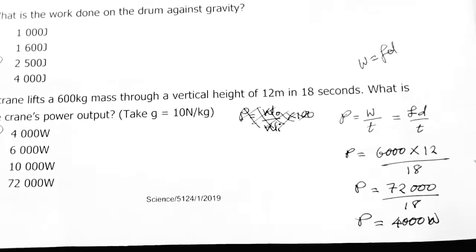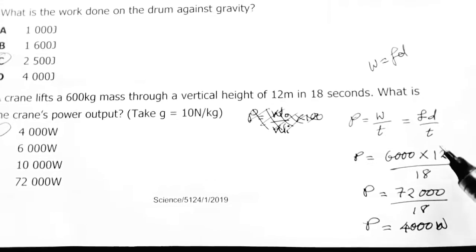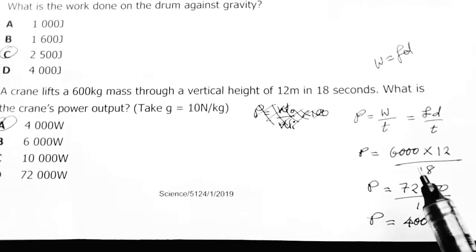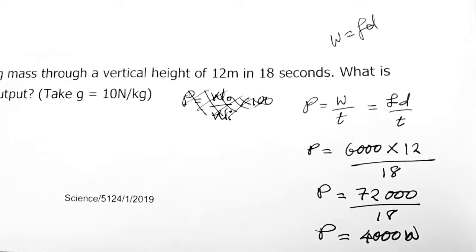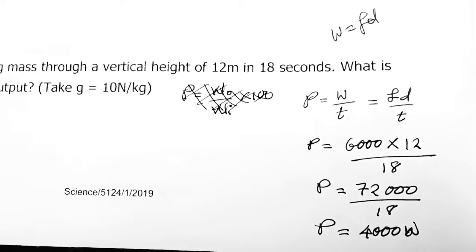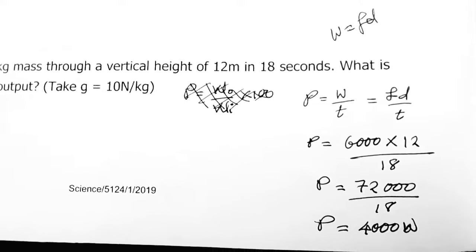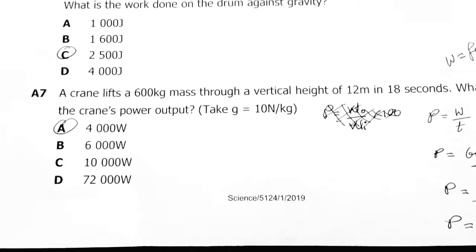Distance is 12 meters over time, which is 8 seconds. Then you have 72,000 over 8, giving you 4000 watts. Our answer is A, 4000 watts.